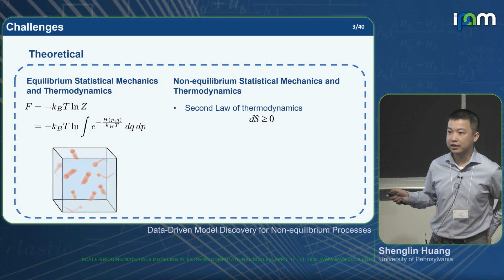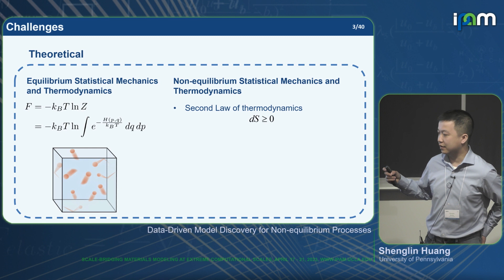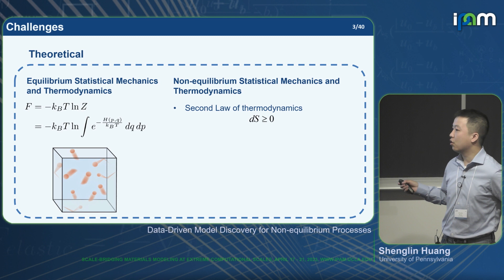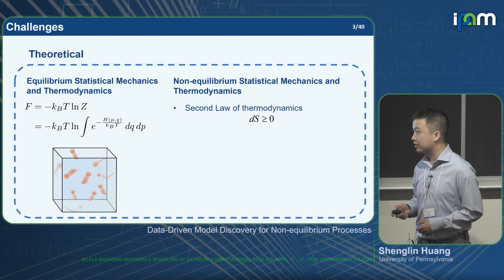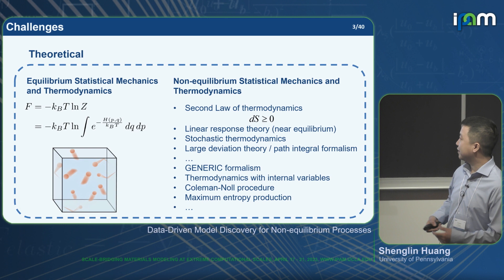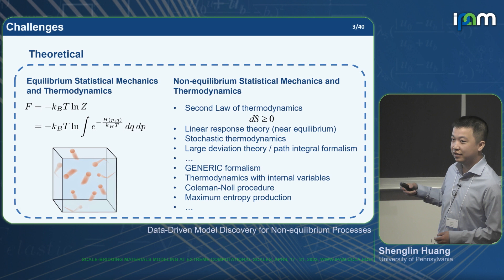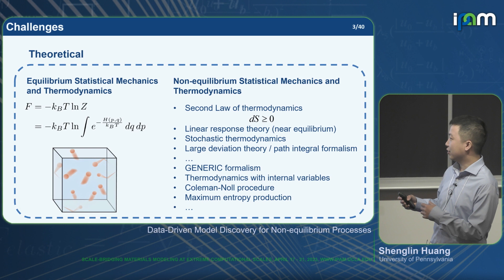The second law only says that for a closed system the entropy will not decrease, but this is only an inequality, not an equality. We still don't know how to write down the equality — how does the system evolve. To build up the equality, there are plenty of different theories, but currently there is still no universal law, and some of them even contradict each other.